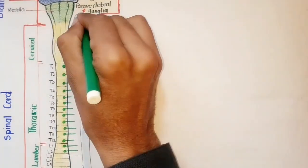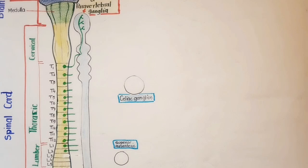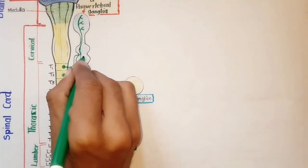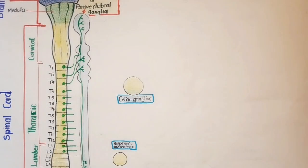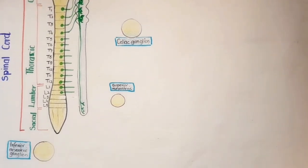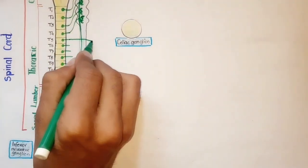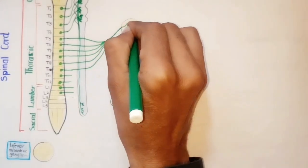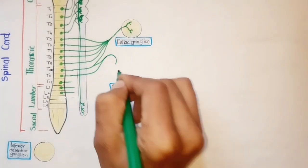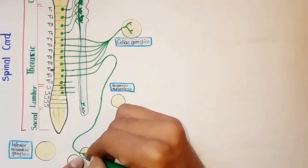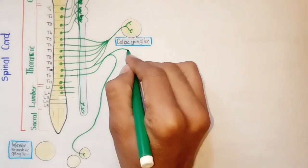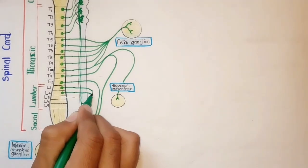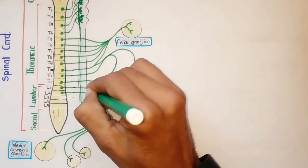The preganglionic neurons may synapse with postganglionic neurons in the sympathetic chain ganglia, while some travel further and make synapses with other neurons, and some directly pass through. For example, preganglionic fibers from T5 to L2 segments synapse with postganglionic neurons in the collateral ganglia — that is, the celiac, superior mesenteric, and inferior mesenteric ganglia — as drawn here.